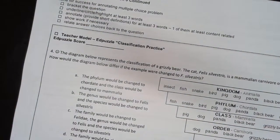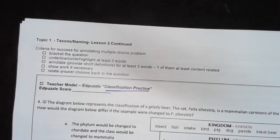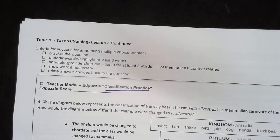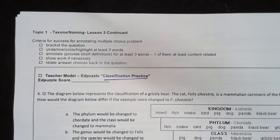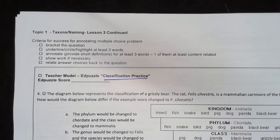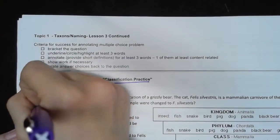Hello, we're going to be going over classification practice. You'll notice there's no annotation words at the top - that's because it's the same as the other one from topic one. We still have the criteria for success for these multiple choice questions.